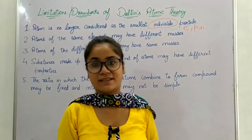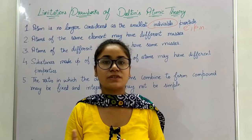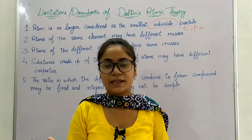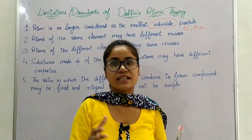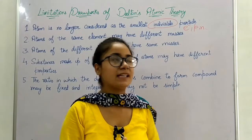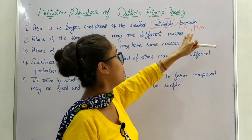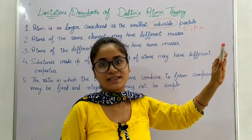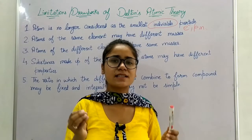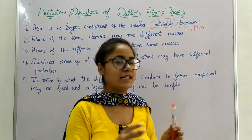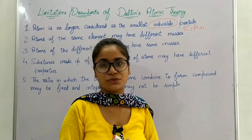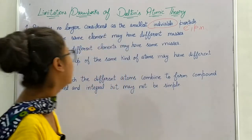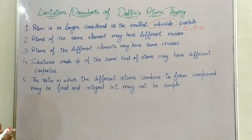This point violates Dalton's atomic theory. The atom can be divided into proton, electron, and neutron. Further scientific advancements are being made to prove that even these three are not the smallest — there may be particles even smaller than electrons, protons, and neutrons — but that is not part of this theory.